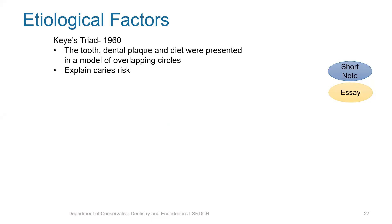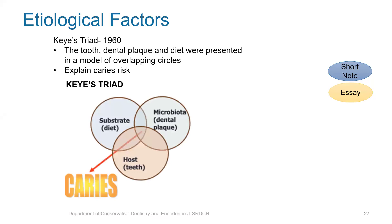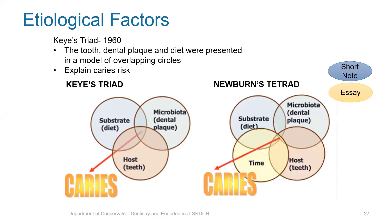The etiological factors of dental caries were initially given by Keys in the form of a triad. The tooth, dental plaque, and diet were presented in a model of overlapping circles, which helped to explain the caries risk of a person. When all these factors came together, it would result in caries. However, he did not consider an important factor of time, because only on prolonged exposure would caries be initiated.